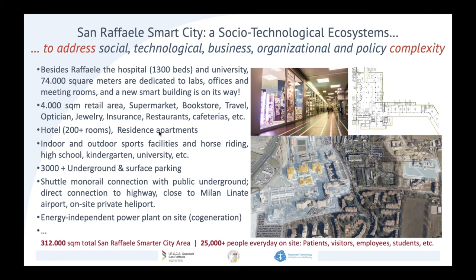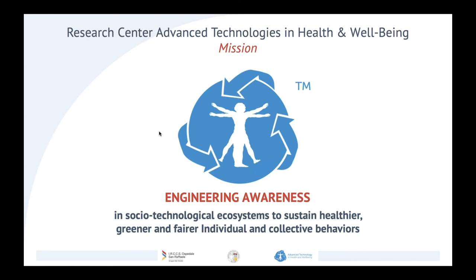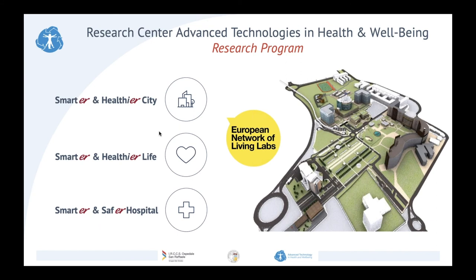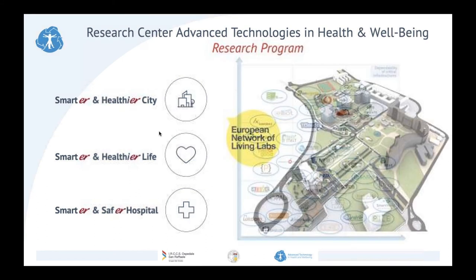These are numbers before COVID — now we are seeing those numbers come back. We are also opening a brand new building that will improve our capacity and attractivity. Within this ecosystem, the research center I direct is the Center of Advanced Technology in Health and Wellbeing, addressing how to sustain healthier, greener, and fairer individual and collective behaviors. We have three research lines: Hospital of the Future, Life of the Future, and City of the Future — all run in parallel and intertwined, because it's impossible to focus on only one part of the ecosystem if you want an overall change of well-being at the public level.